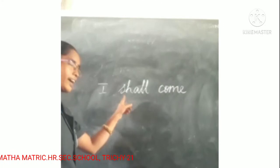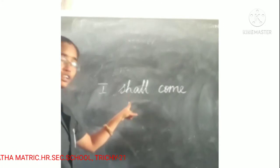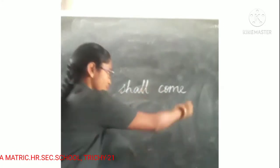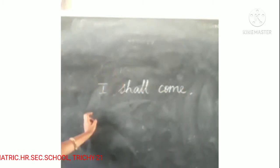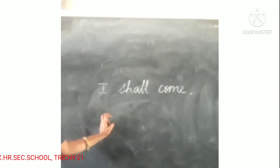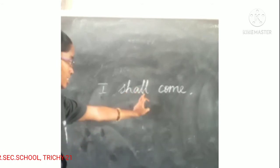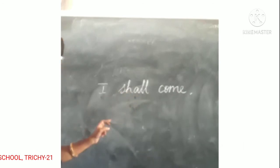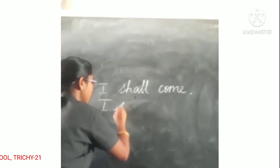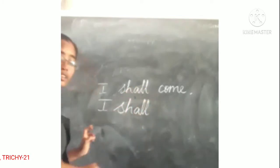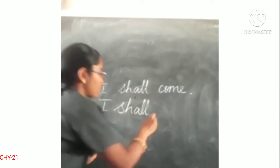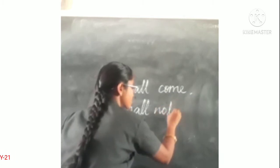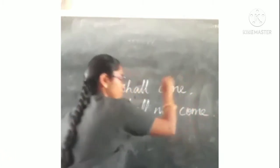'I shall come.' Find out the tense — it is a future tense. How do you change this sentence into negative? In this sentence we put 'not' just next to 'shall'. So we change it to: 'I shall not come.'